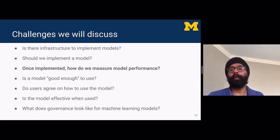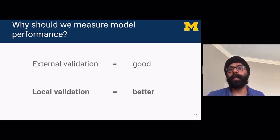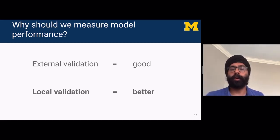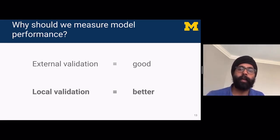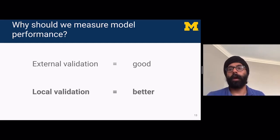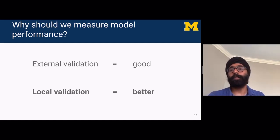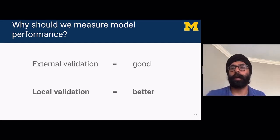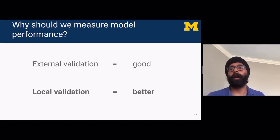Once a model is implemented and running in the background, how do we measure its performance? First of all, do we need to measure it? When you're a model developer, you're taught that internal validation is okay but external validation is good. When you're sitting in the seat of a model implementer at an institution, it's great to know a model externally worked elsewhere, but it's even better to know that the model works here. That's probably one of the biggest reasons to try to measure local model performance.